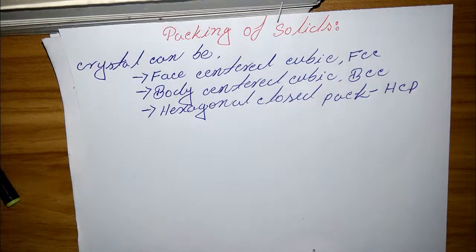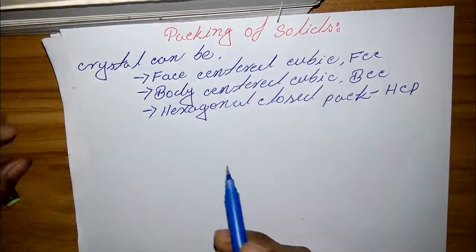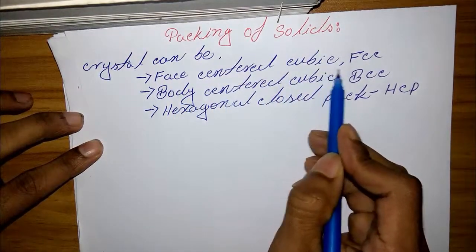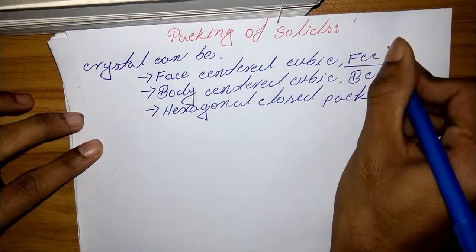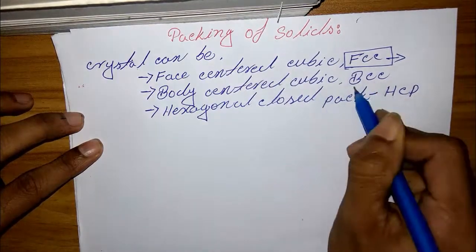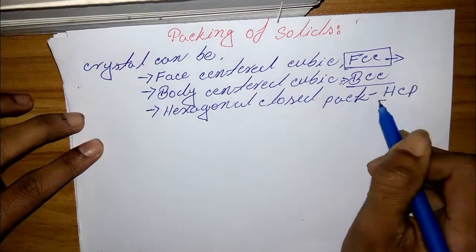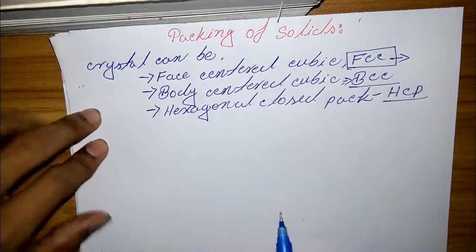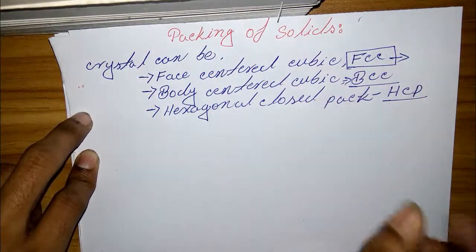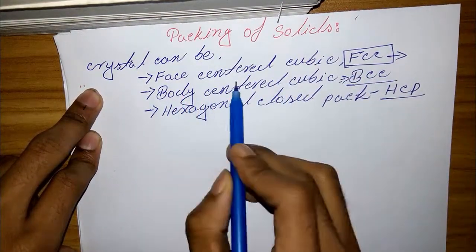The discussion of this topic is packing of solids. Crystals can be face-centered cubic, or FCC, body-centered cubic, or BCC, and hexagonal close-packed, or HCP. The packing factor is very essential for crystalline solids. First, I will discuss FCC, or face-centered cubic.